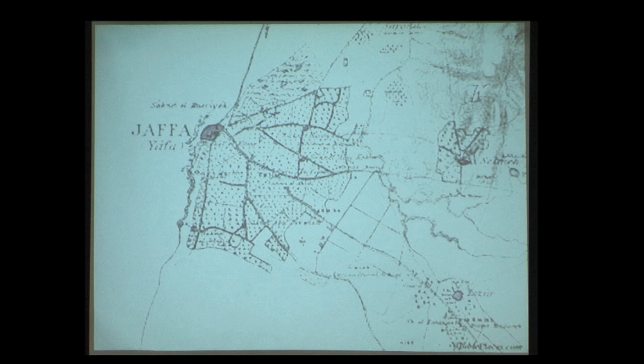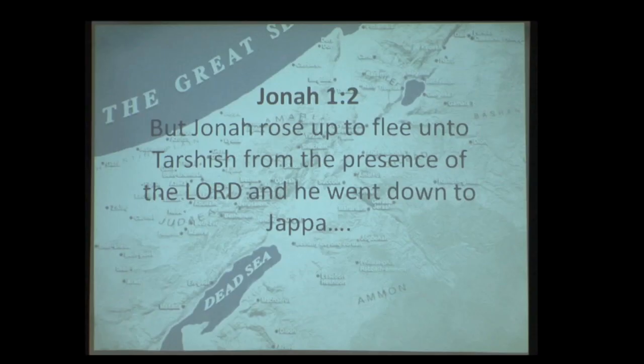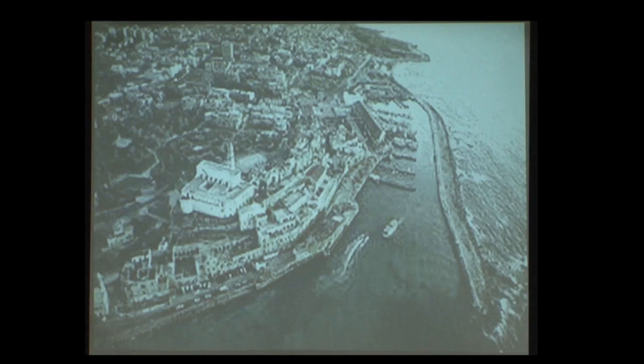Our last city is Jaffa — a Phoenician word meaning 'beautiful,' and it really is. This is the port city for Judah. If you want to bring timbers to build the temple in Jerusalem, you cut them in Tyre, tow them by boat to Jaffa, then bring them 40 miles and 2,500 feet up to Jerusalem. Jonah 1: 'Jonah rose up to flee from the presence of the Lord, and he went down to Jaffa' — that's where Jonah went.